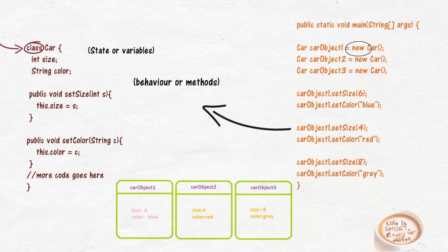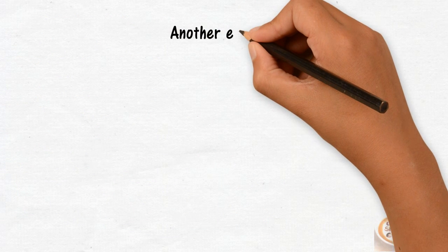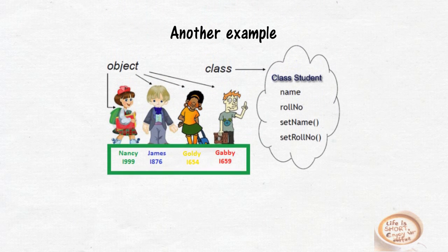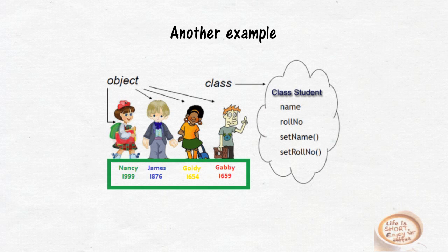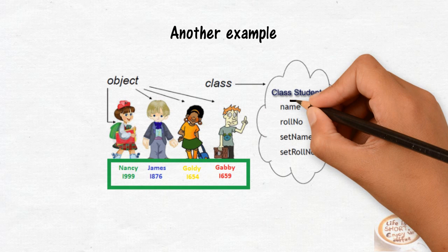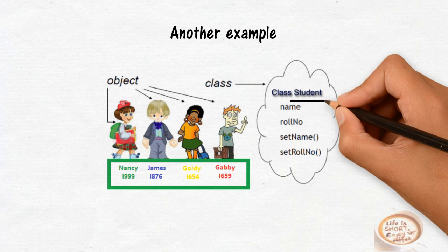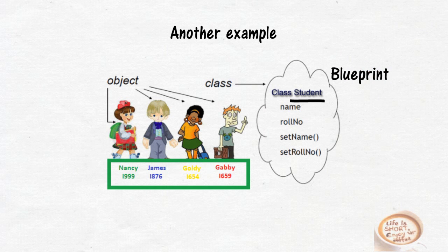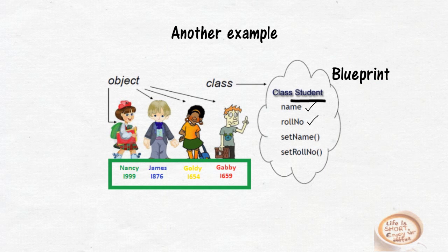Let's take another example. To make you better understand, focus on this picture. Here, student is a class and it serves as a blueprint or template which shows us what our object will hold. It will hold the name and roll number, and using the set name and set roll number method, we can create as many objects. Here I am creating four objects.